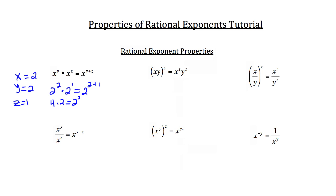4 times 2 on the left-hand side is 8, and 2 cubed — 2 times 2 times 2 — is also 8. So the multiplication property checks out. That's the multiplication property of rational exponents.